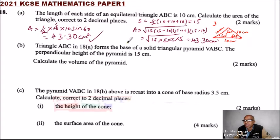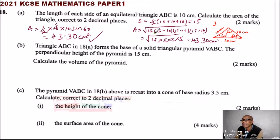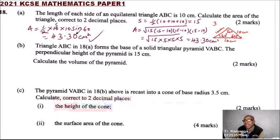The best method is half a·b·sin θ, as you can see the Heron's formula has several steps. In mathematics, you try to use the quickest correct method to arrive at the answer. Using Heron's formula will still earn you the mark, but it takes more time.